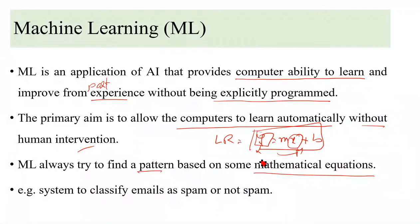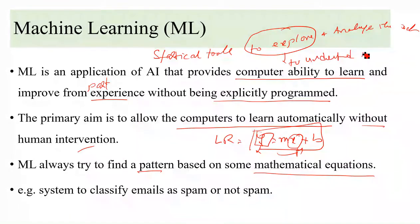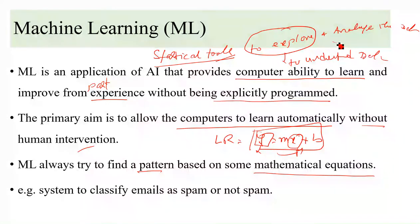Machine learning provides statistical tools to explore and analyze the data. To explore means to understand the data — without understanding the data we can't go further; we must first understand the problem statement. An example is systems that classify emails as spam or not spam.